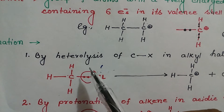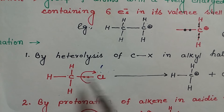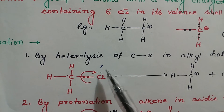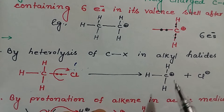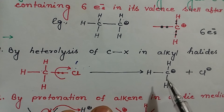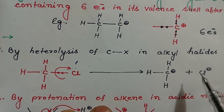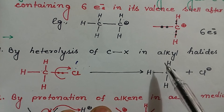Heterolytic bond cleavage means the bond will be broken unsymmetrically, and we now have two types of ions: a cation and an anion. The cation formed is methyl carbocation.